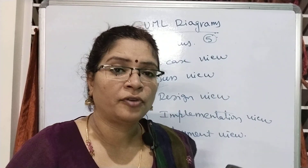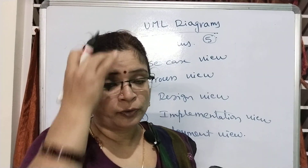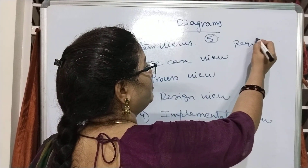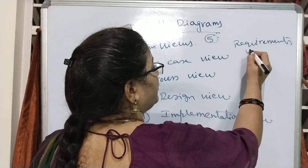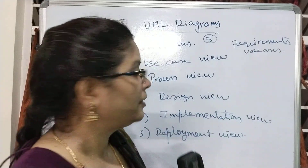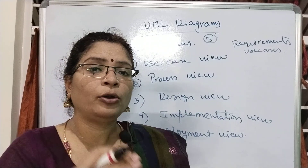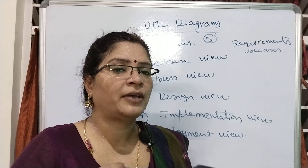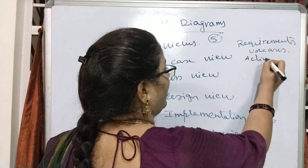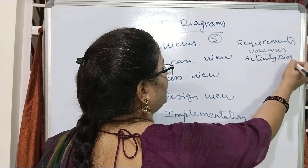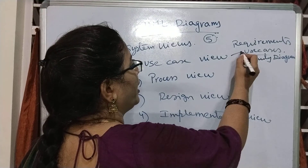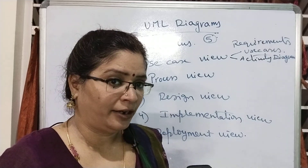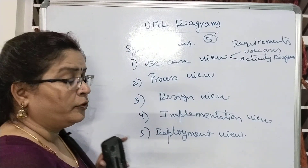First, we are going to talk about the use case view. The use case view tells us about the requirements of the system using use case diagrams, and also how the ongoing activities are linked with events — what are the various kinds of activities — all these things with the help of activity diagrams. So use case view covers two diagrams: number one, use case diagrams; number two, activity diagrams.